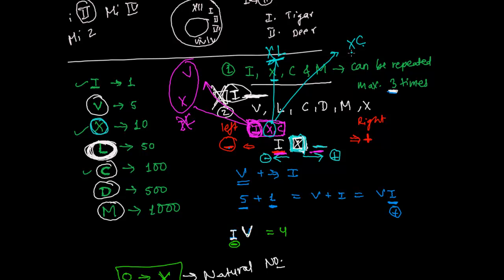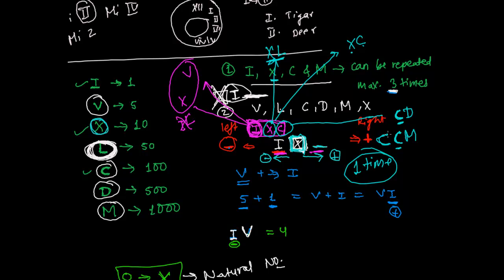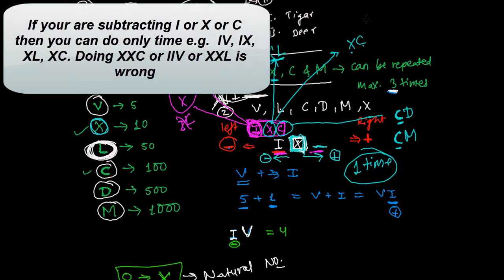When writing a subtractive symbol before a larger symbol, you can only write it one time. For example, you cannot write CC before M to mean 800 — that's incorrect. For 900 you write CM (C before M), but you cannot write CCM. The Roman numeral system has a proper way to write all values.